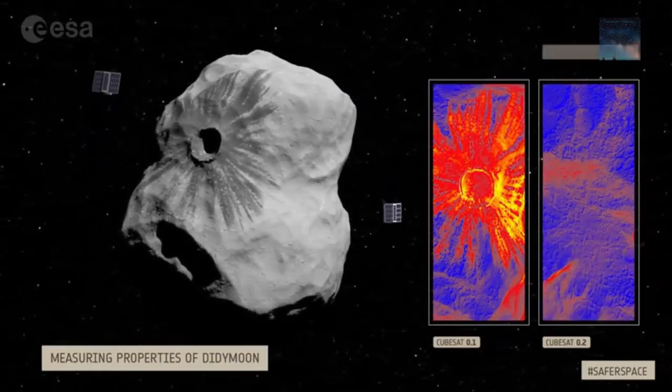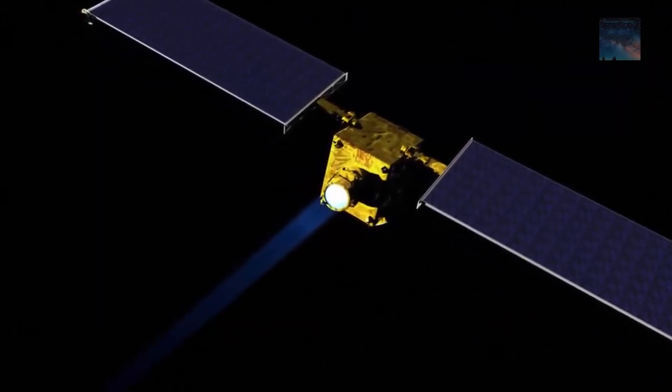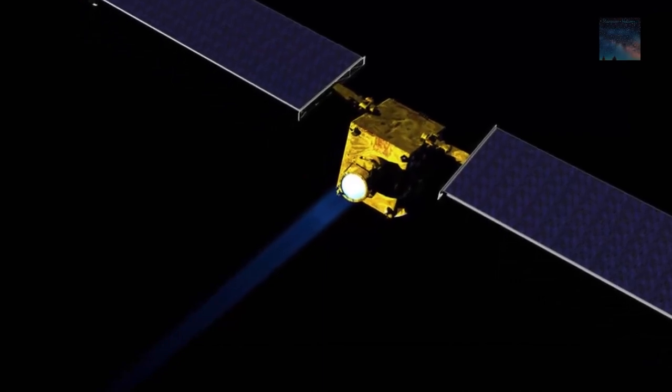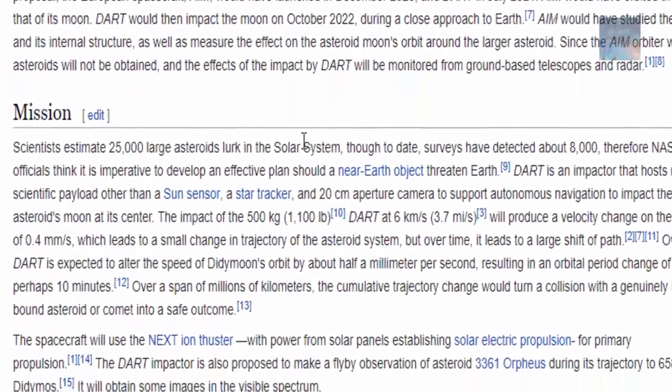The Hera spacecraft is scheduled to reach the target in 2026. By this time, NASA's DART will have historically altered the duration of the orbit of the target asteroid.